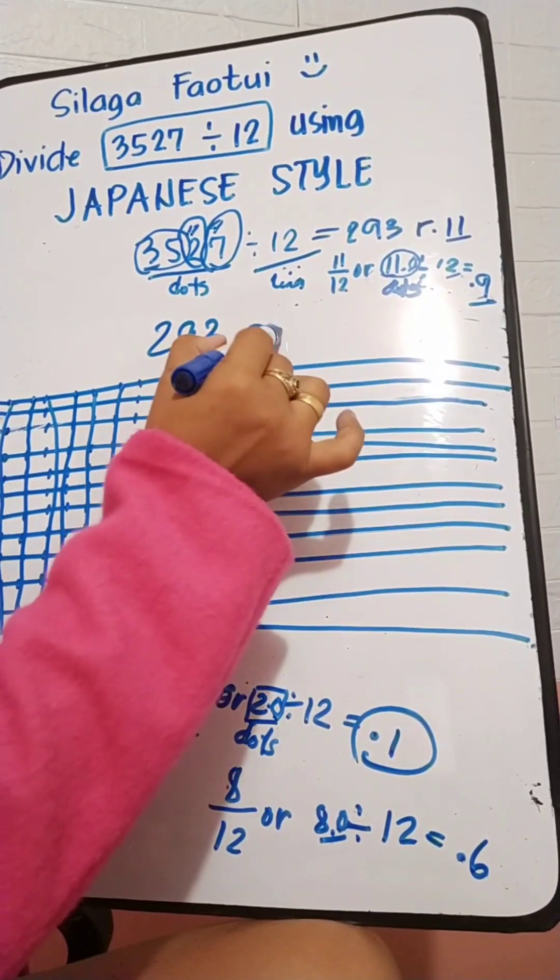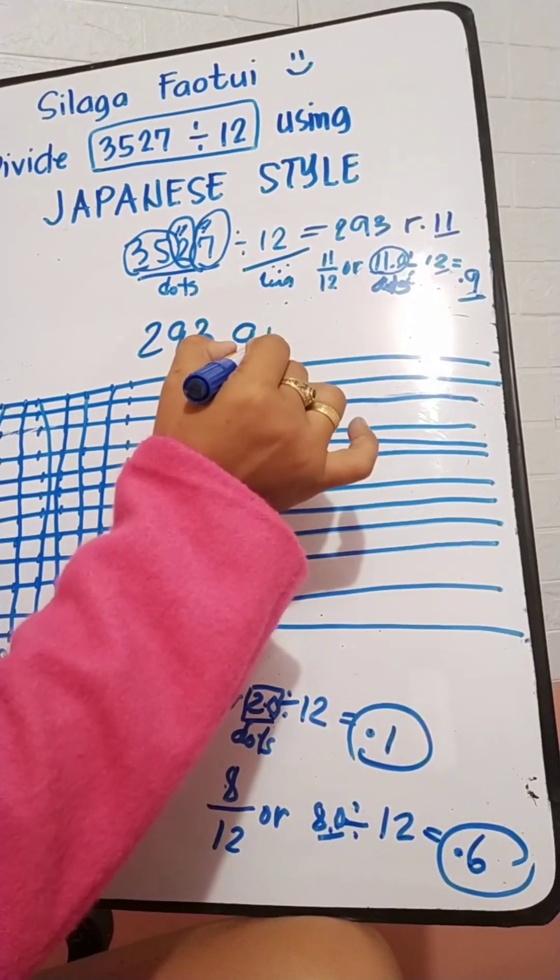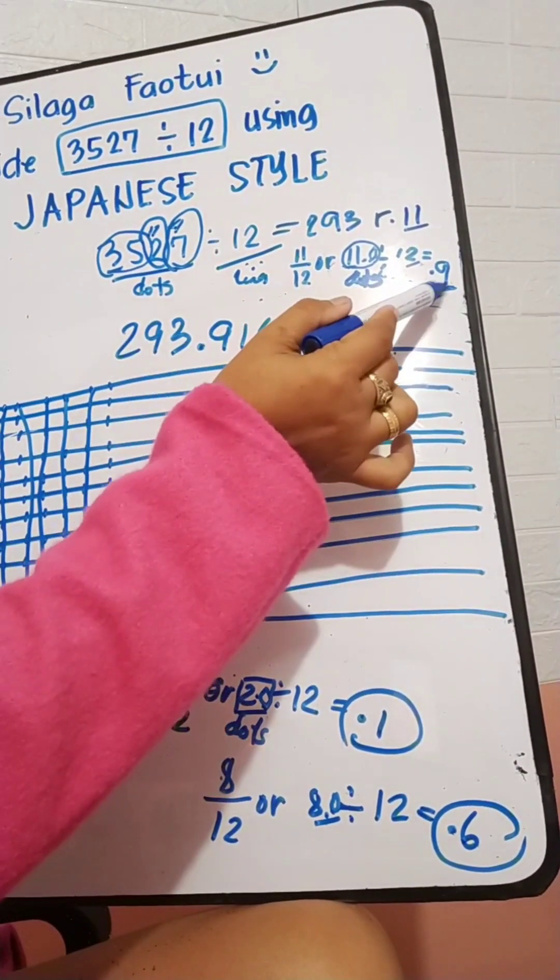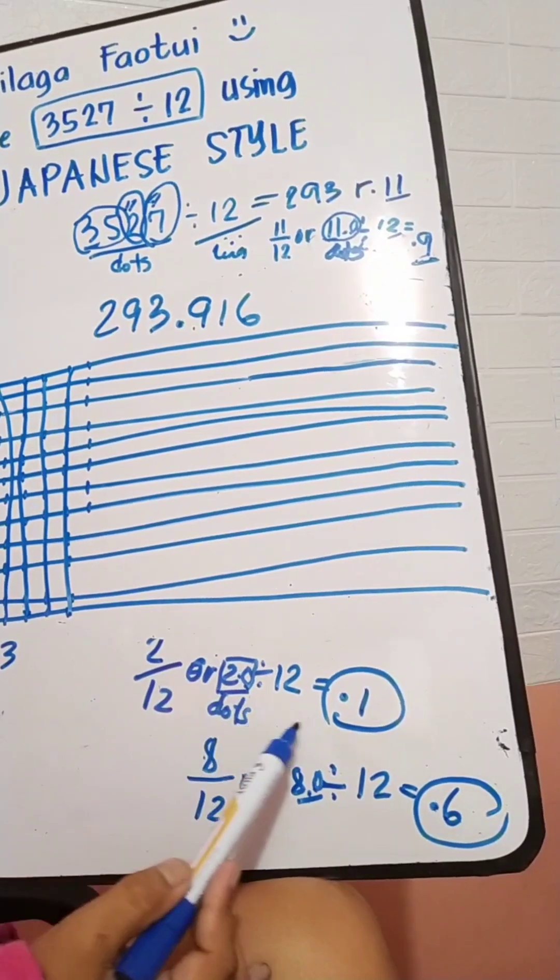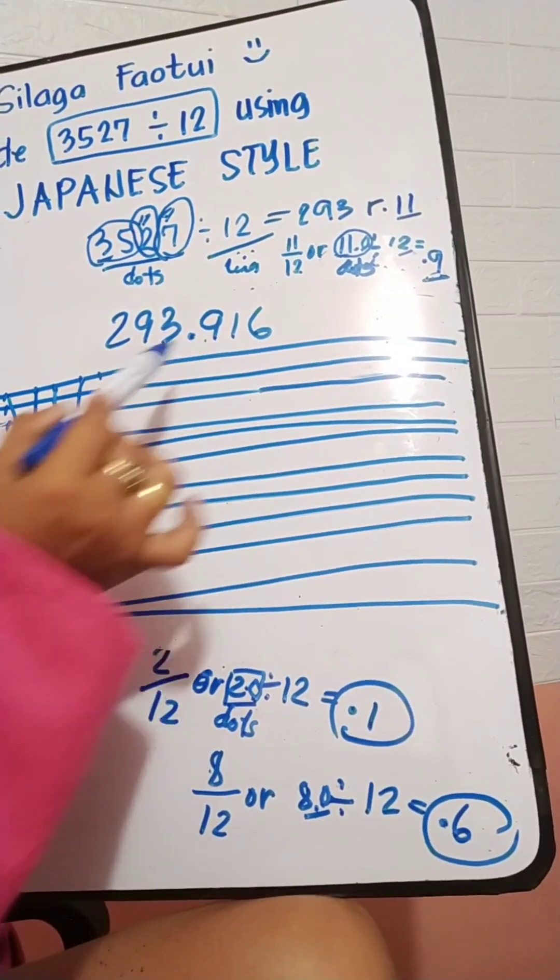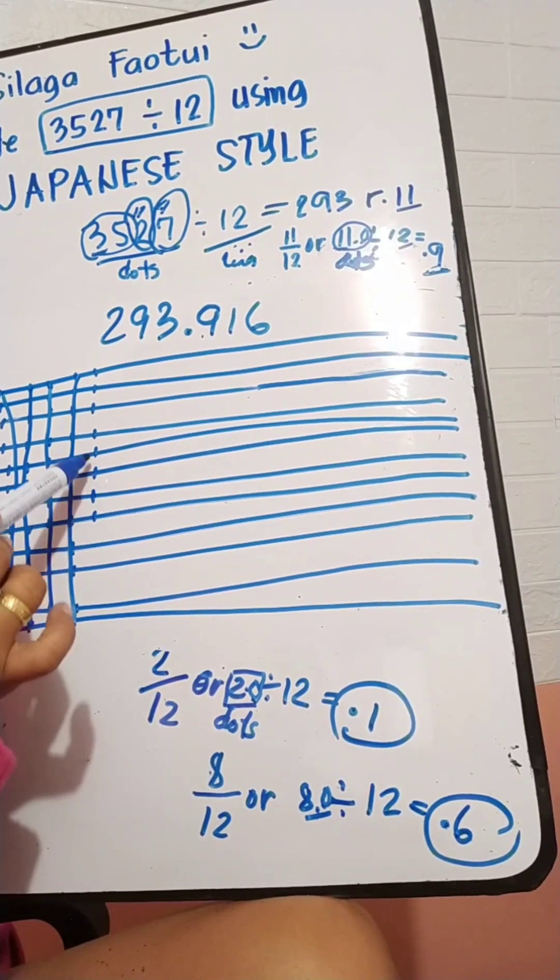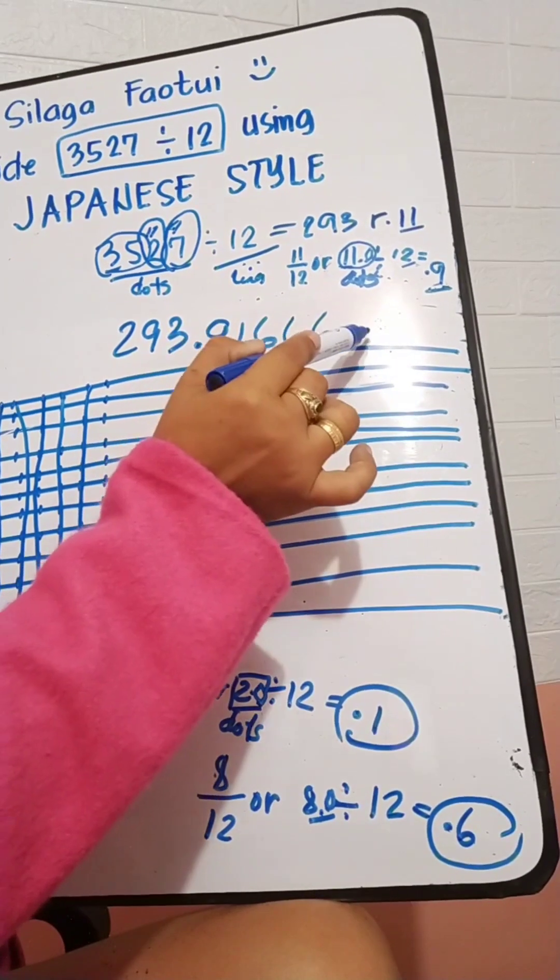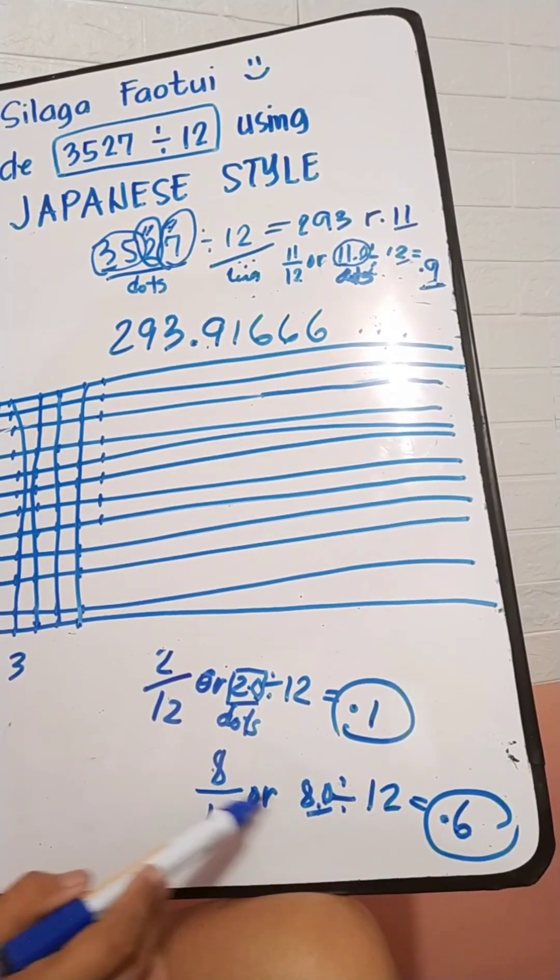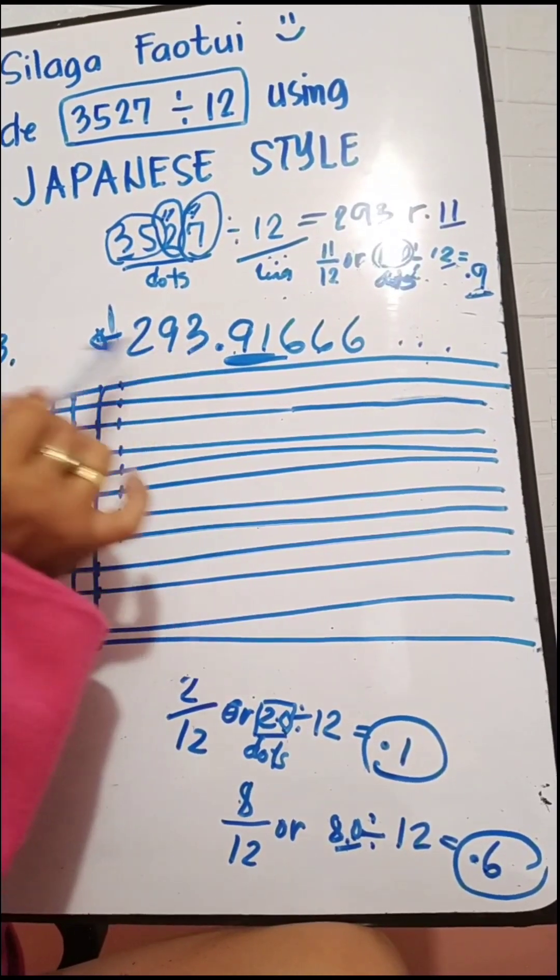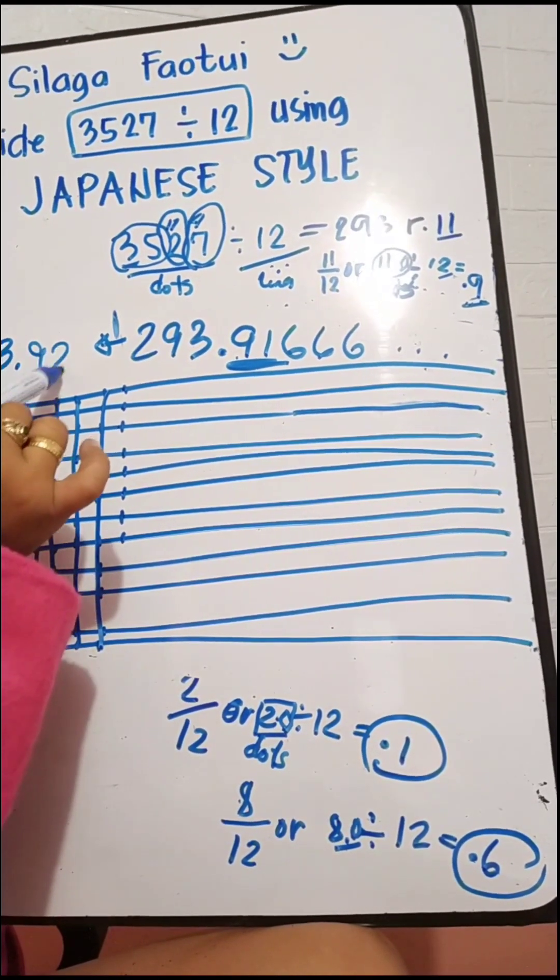This is the tenth place, the hundredth place, and also the thousandth place. We still have 8, so we will just continue. It could be point 6, 6, and so on. If our answer is to the nearest hundredth, so it could be 293.92.